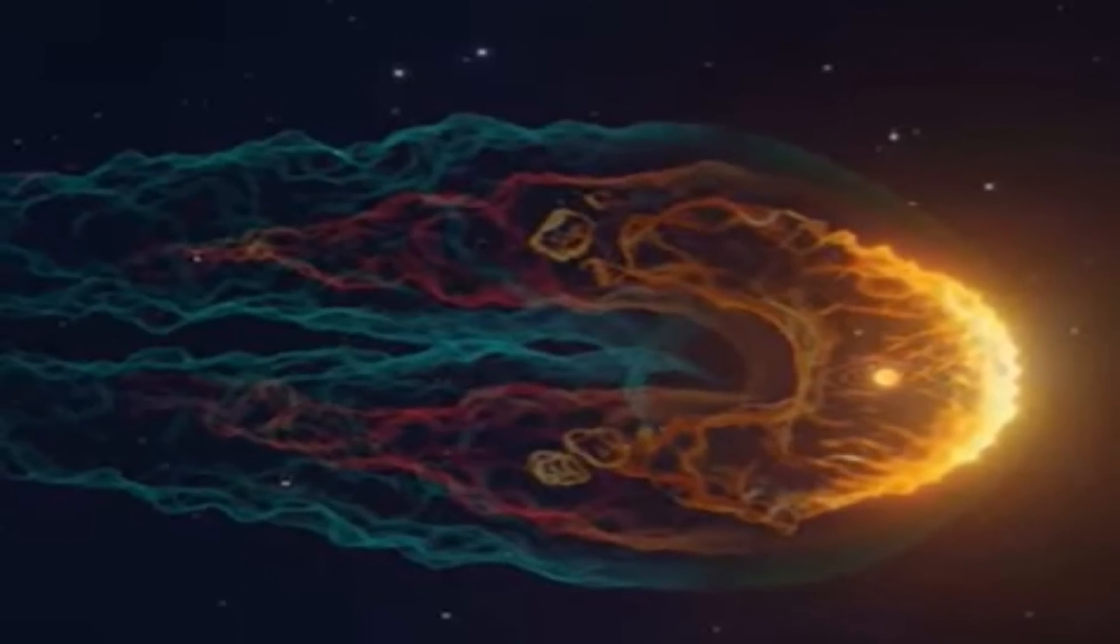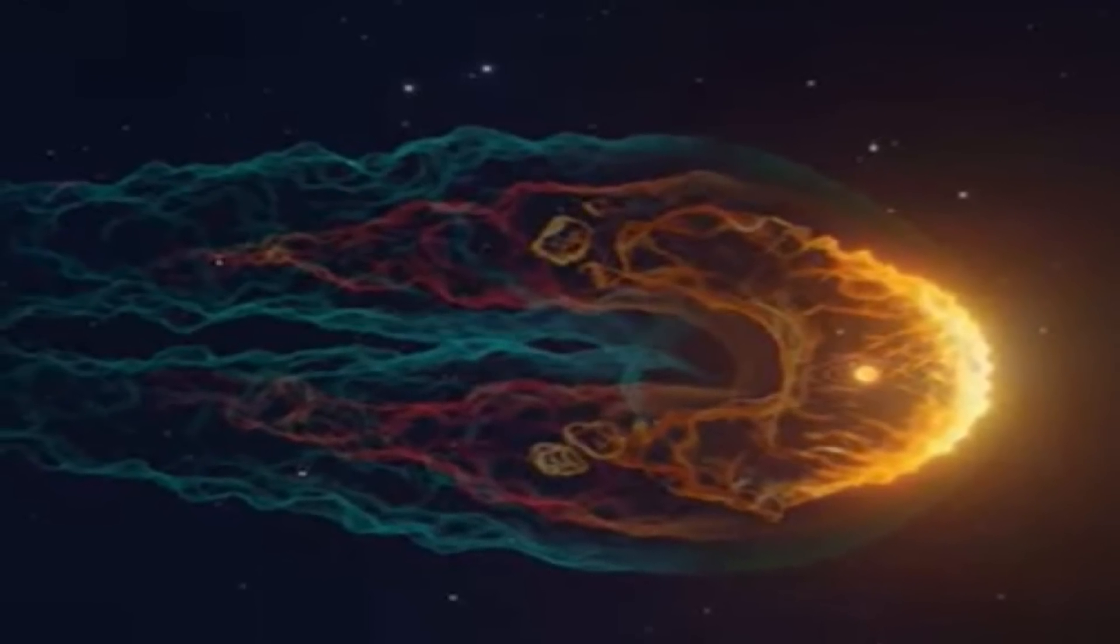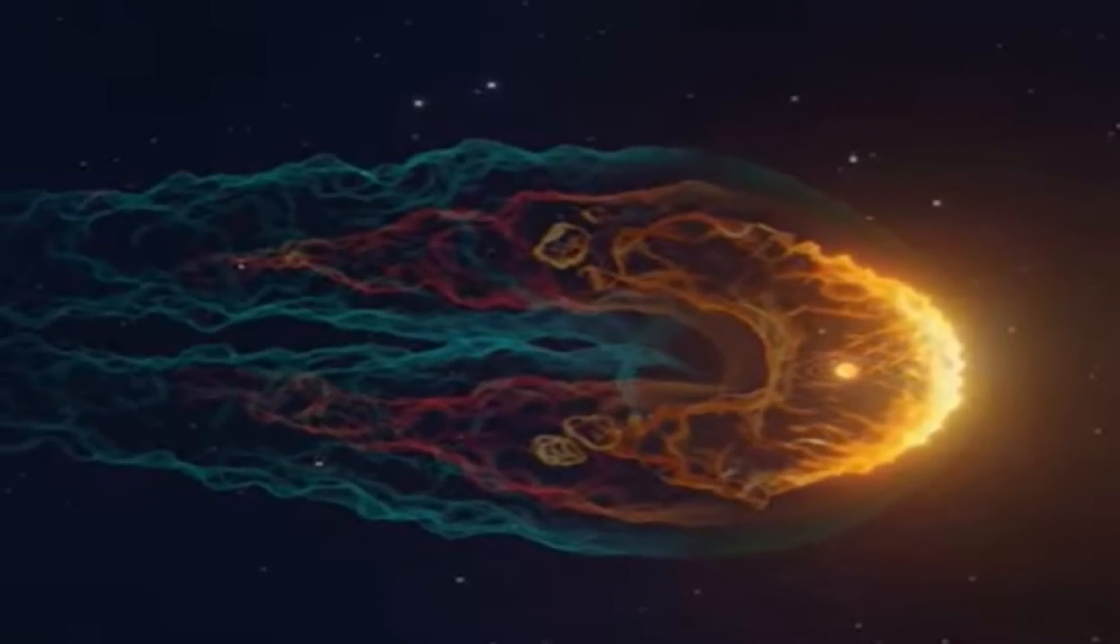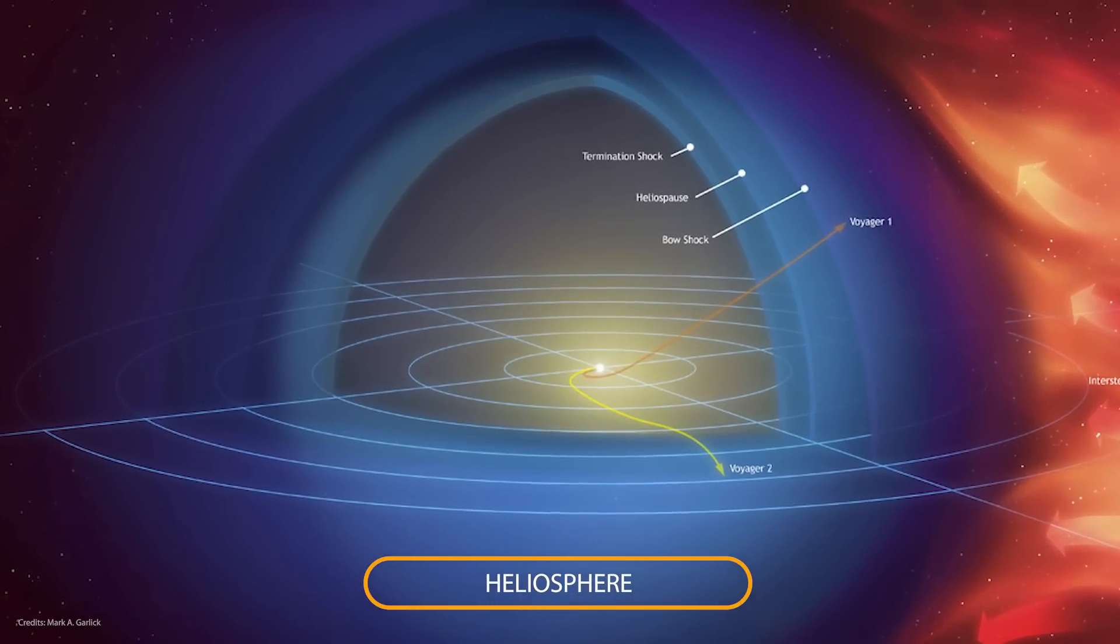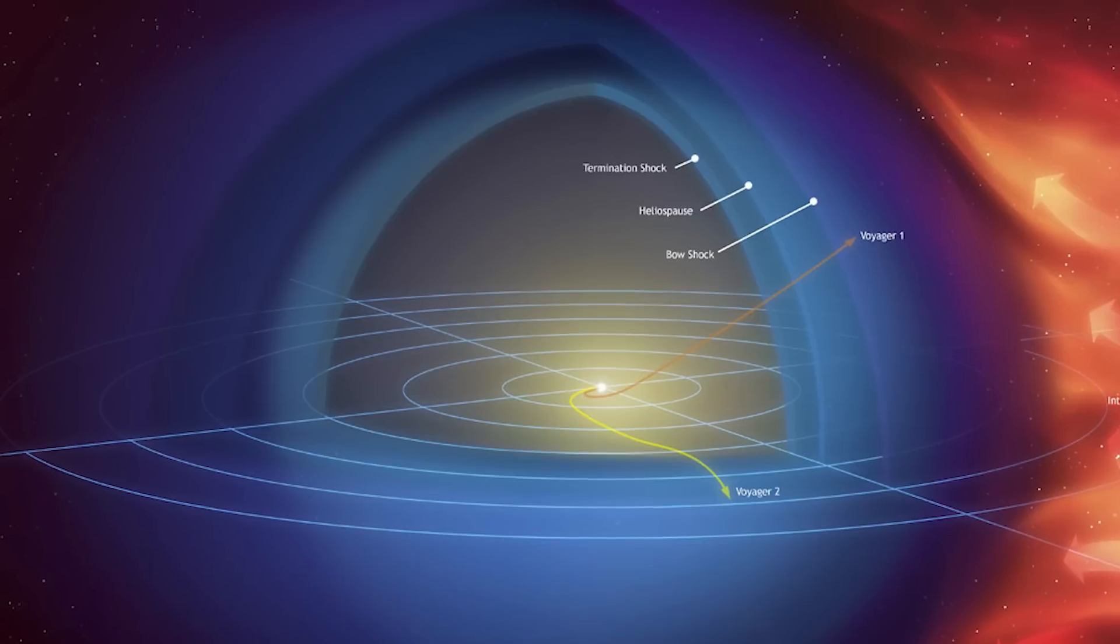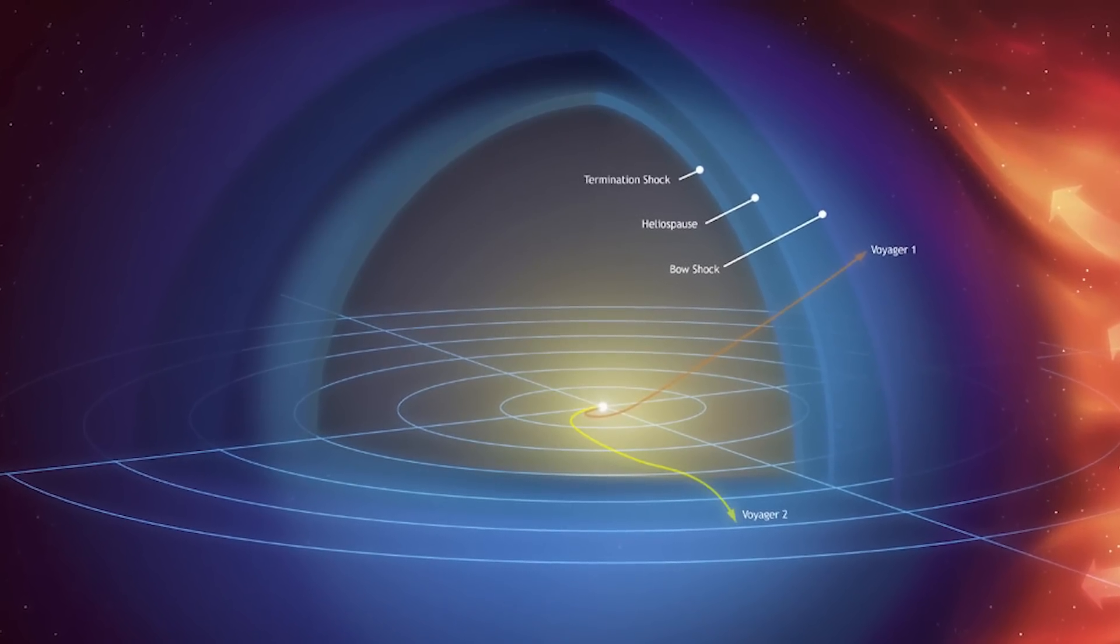When we take into account the gas of the solar system, we realize it is shaped like a deflated croissant. This is thanks to the heliosphere, a bubble in space that is made of charged particles and is held together by the solar wind, spreading out from the Sun.